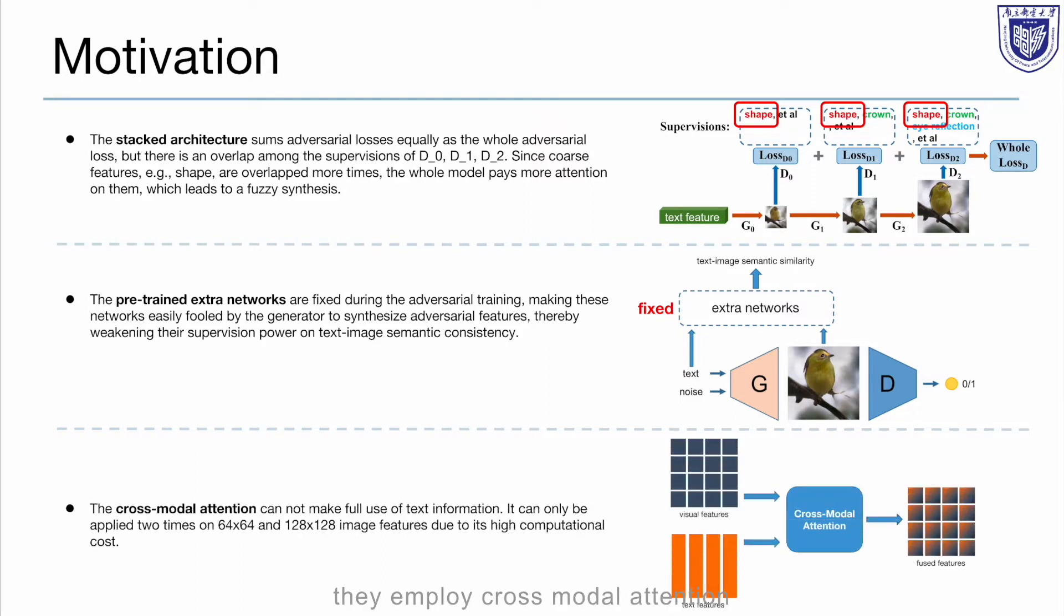Third, they employ cross-modal attention to fuse text and image features. But it cannot make full use of text information, since it only fuses two times in their network due to its high computational cost.